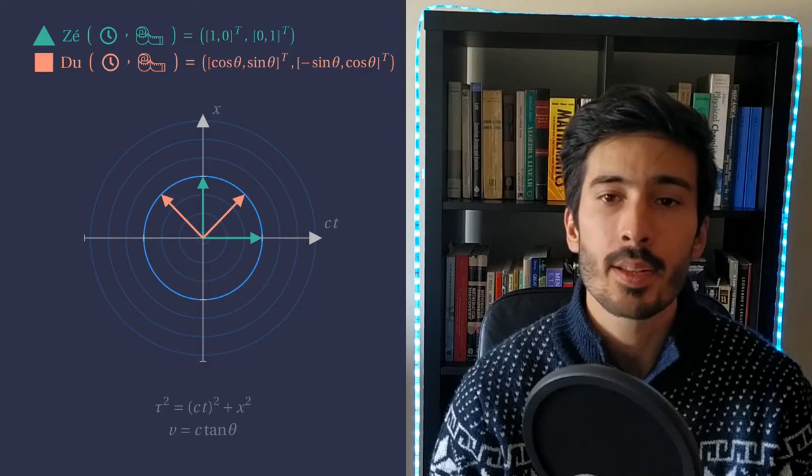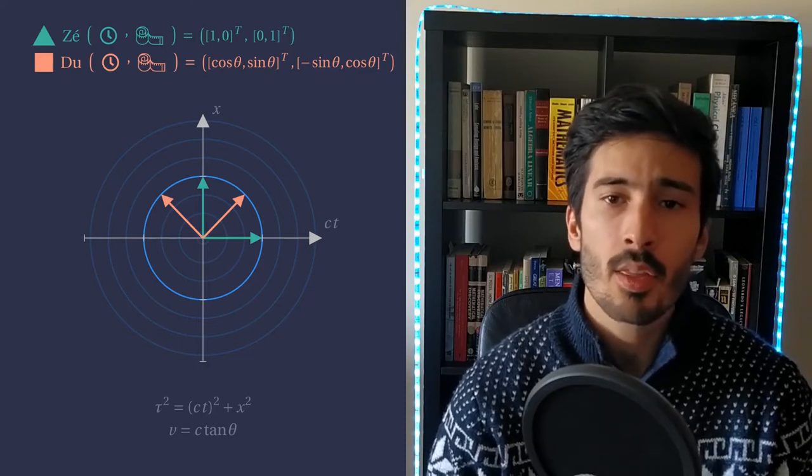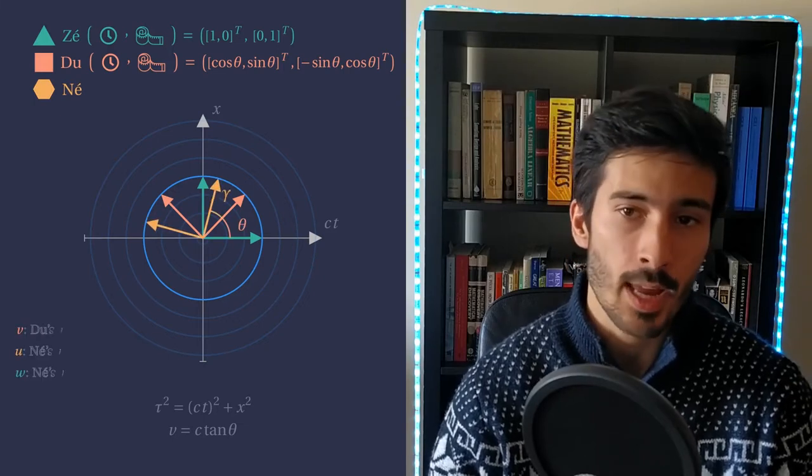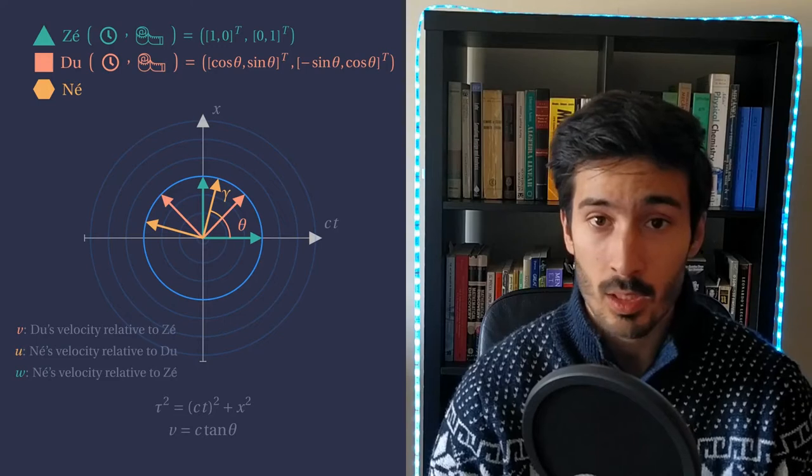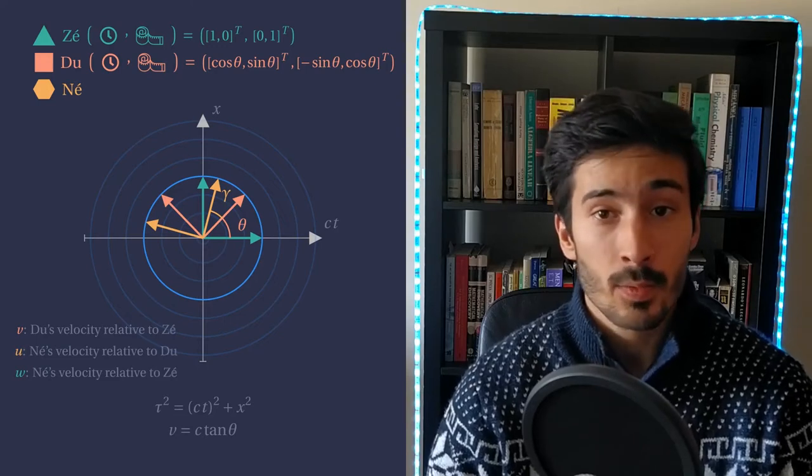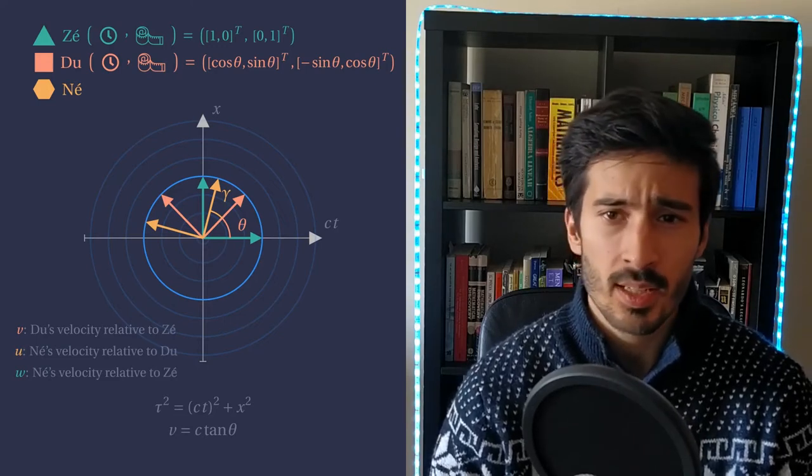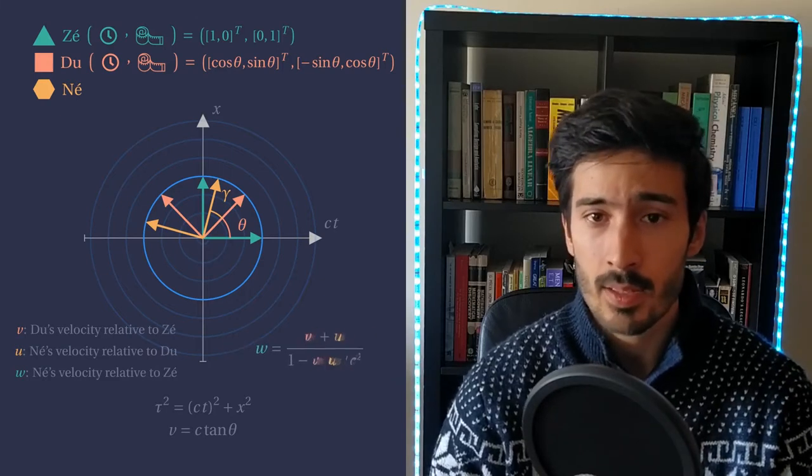Let us try to understand how our velocities combine in our spacetime. Consider a third observer, Ne. So, now assume Du moves relative to Ze at velocity v, Ne relative to Du at velocity u, and relative to Ze at velocity w. In our day-to-day, we just say that w is v plus u. Does our model give the same answer?